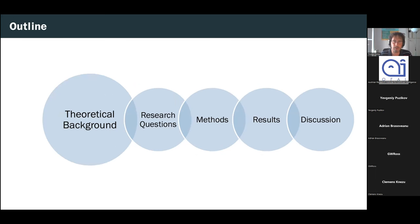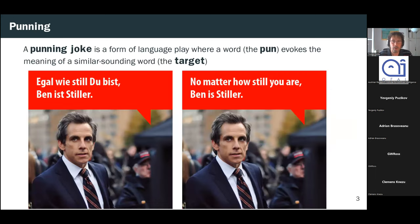So let's start with the theoretical background. So punning, as you probably know, is a form of humorous language play in which a word or a phrase is used to evoke the meaning of another word or phrase with a similar or identical pronunciation. So in the punning joke, we refer to the more obvious surface form as the pun and the similar sounding word that it evokes as the target. So on this slide are some examples of punning jokes in German and English.